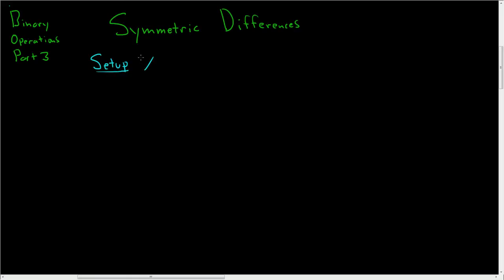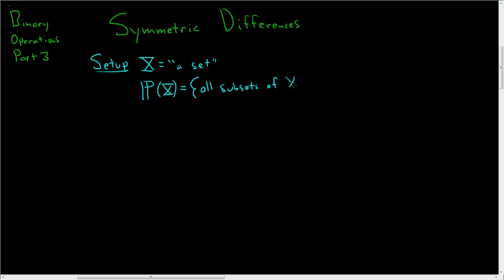Capital X will be a set. We're going to look at a set which is called the power set of capital X. This is equal to the set of all subsets of capital X. And what we're going to do is define a new binary operation, one that's different from union and intersection and set difference. It's called the symmetric difference.